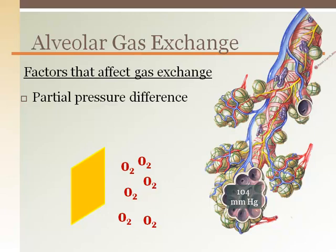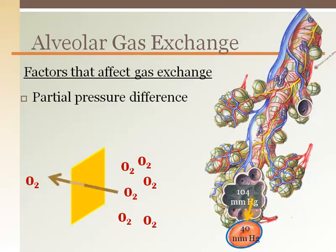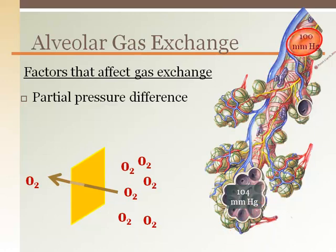The partial pressure of oxygen in the alveoli at sea level is around 104 mmHg. The partial pressure of deoxygenated blood entering the lungs and wrapping around the alveoli is around 40 mmHg. Therefore, the partial pressure difference of oxygen between the alveoli and the blood drives oxygen out of the high concentration in the alveoli to the lower concentration in the blood. This way, when blood leaves the alveoli, it is filled up with oxygen to around 100 mmHg.